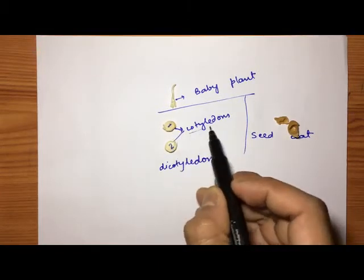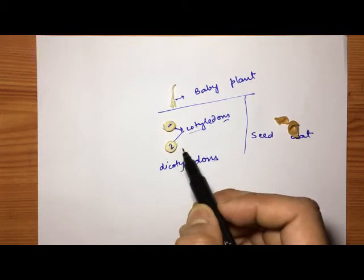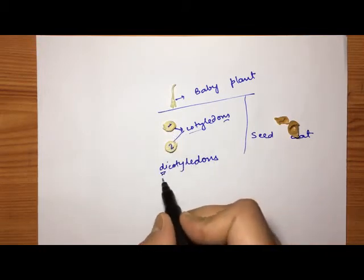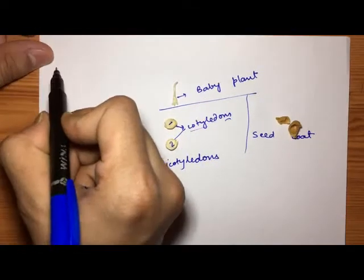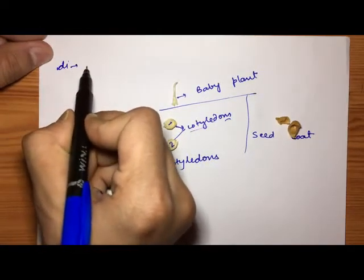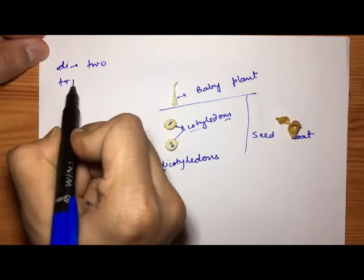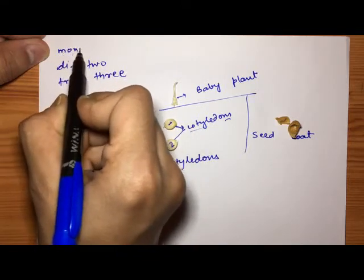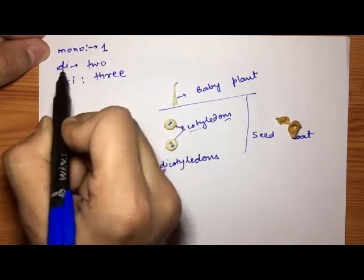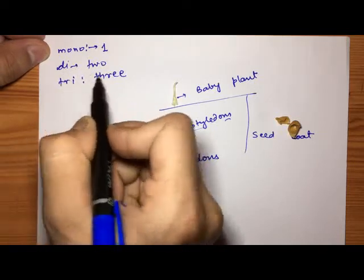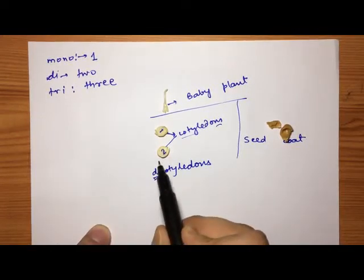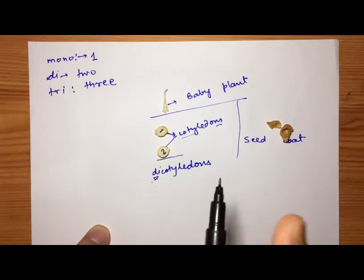These parts are called cotyledons, and how many are there in gram seed? They are two, so we call them dicotyledons. The meaning of di is two. Di means two, tri means three, mono means one. Now in gram seed there are dicotyledons.